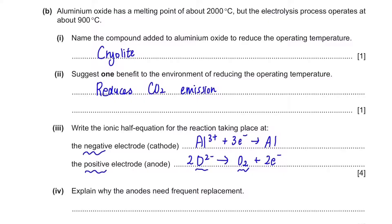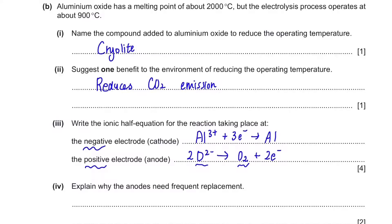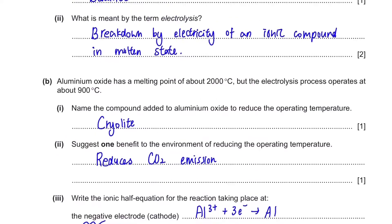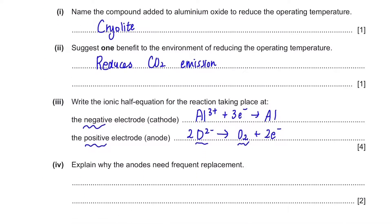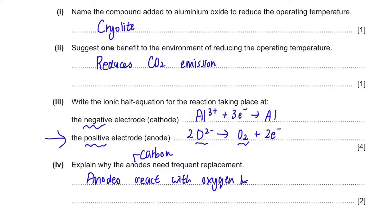Lastly, explain why the anodes need frequent replacement. If we look at the anodes, they are made of carbon. Oxygen is produced at the anode, and the carbon reacts with this oxygen to form carbon dioxide. So the answer is: the anodes react with oxygen and form carbon dioxide. Carbon dioxide is acidic and corrodes the anode, but you don't need to write that for the answer.